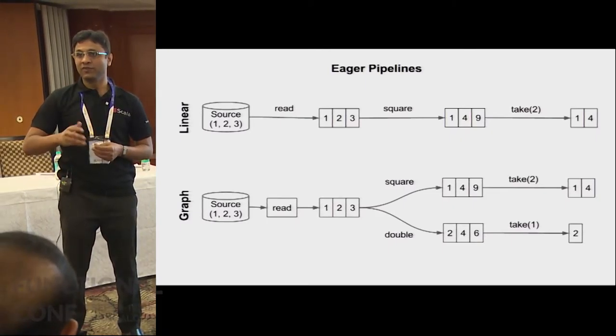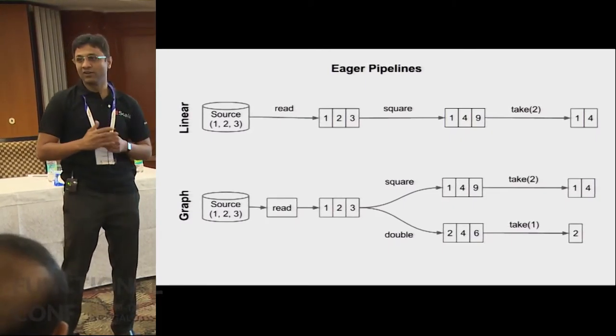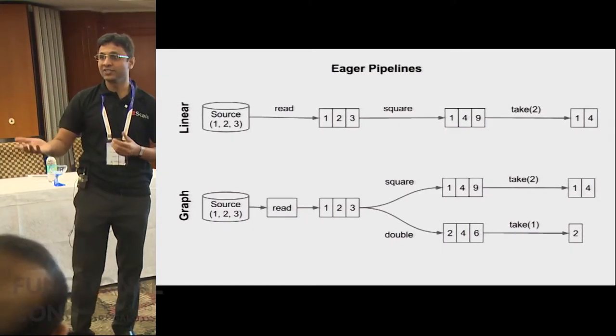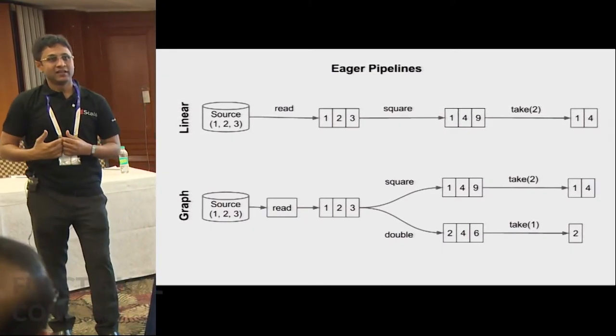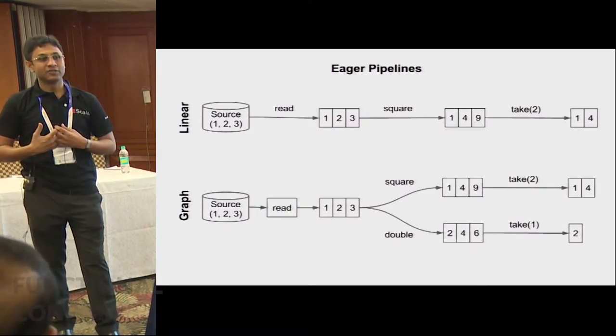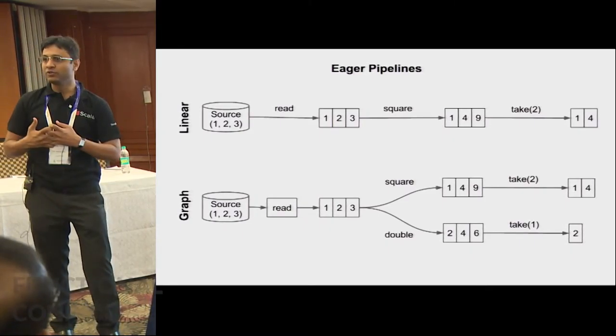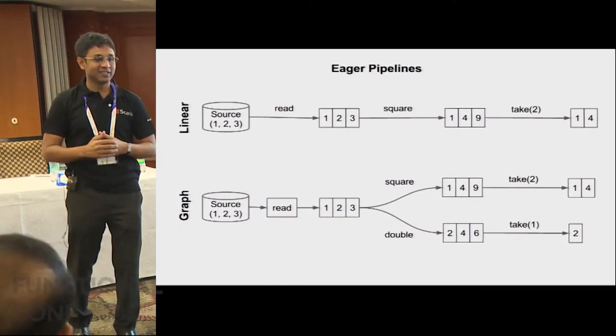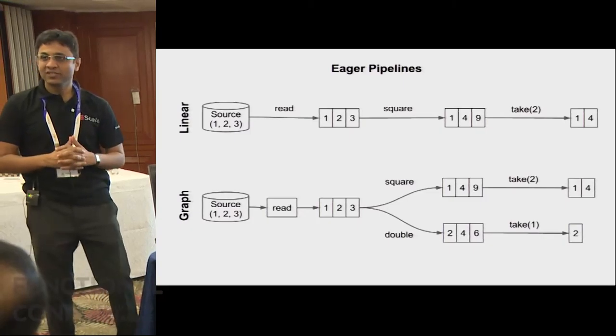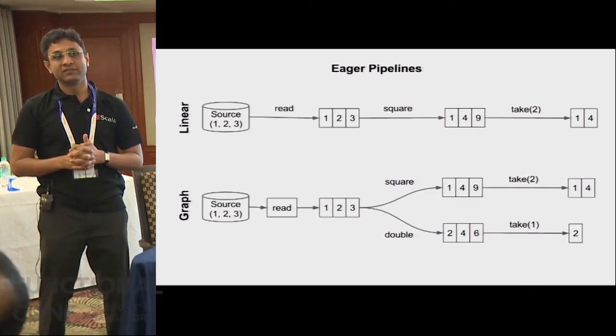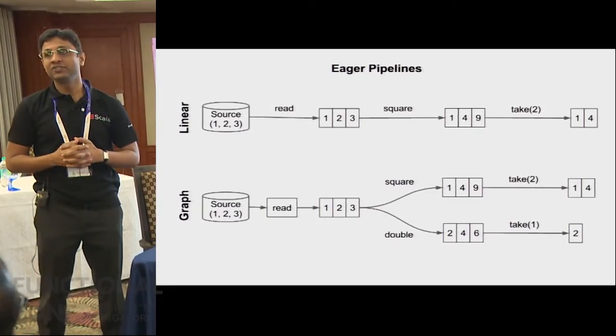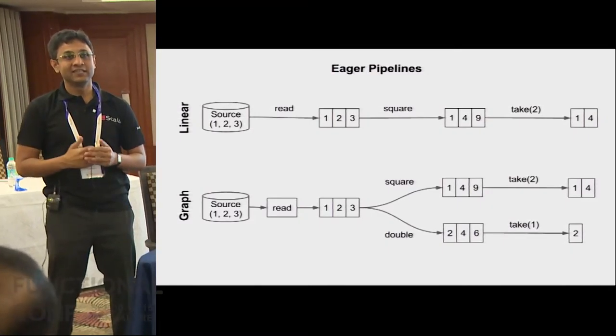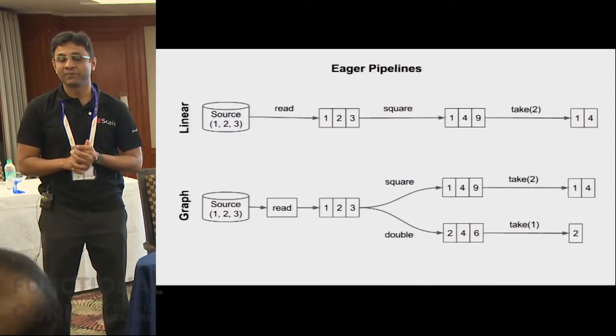And then you do further processing like square all the numbers, dot map square, and you get yet another collection in memory. So that is how it works. And then finally you say take two, and then you get the first two elements. Again, yet another collection in memory. And then these collections are immutable, which is good, because then they can be freely shared. And we'll see that in the next graph, how sharing is easy and possible.